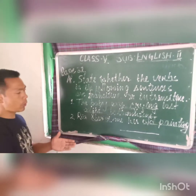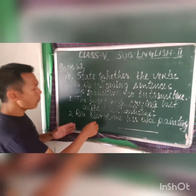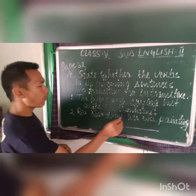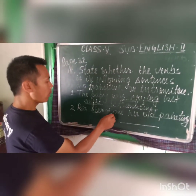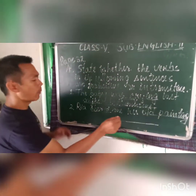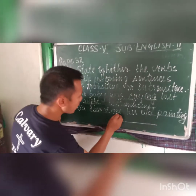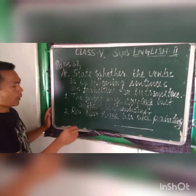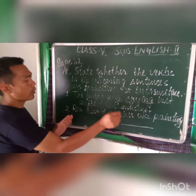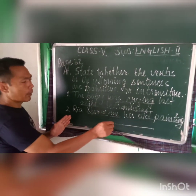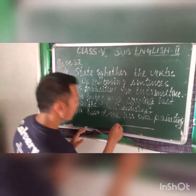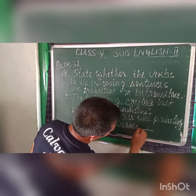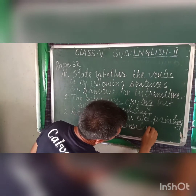'Her old painting' is answering the question 'what,' and it also answers the question 'whom' — 'Whom did Ria see?' — 'Ria saw me her painting.' So 'me' is answering the question 'whom' and 'her old painting' is answering the question 'what.' Therefore, this verb is called a transitive verb. You have to write down here: transitive.